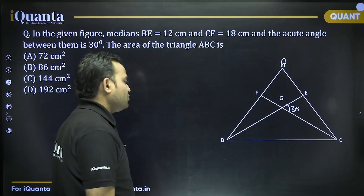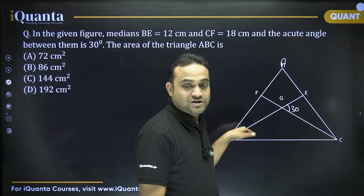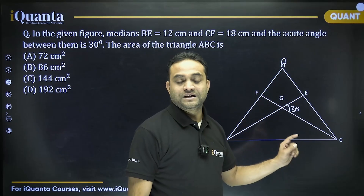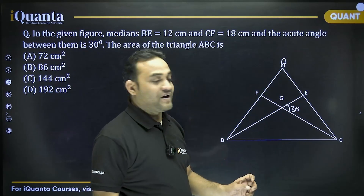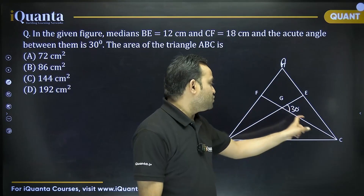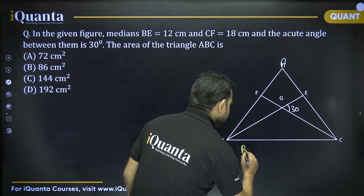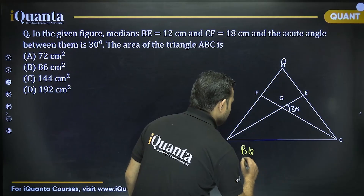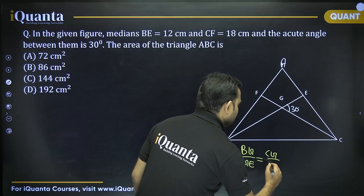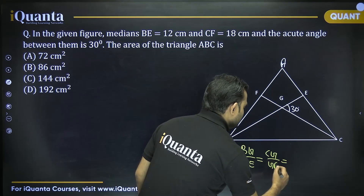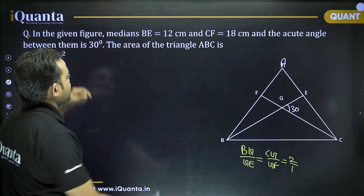What do we know about medians? Whenever two medians intersect, the intersection point G is called the centroid, and the centroid divides a median in a 2:1 ratio from vertex to base. So BG:GE = CG:GF = 2:1.